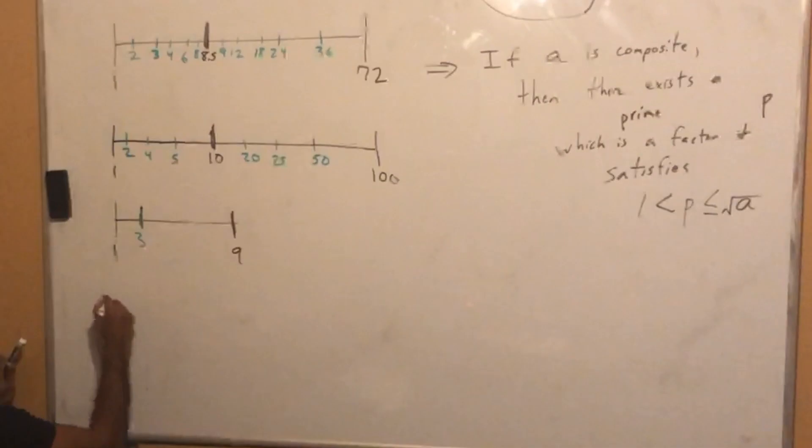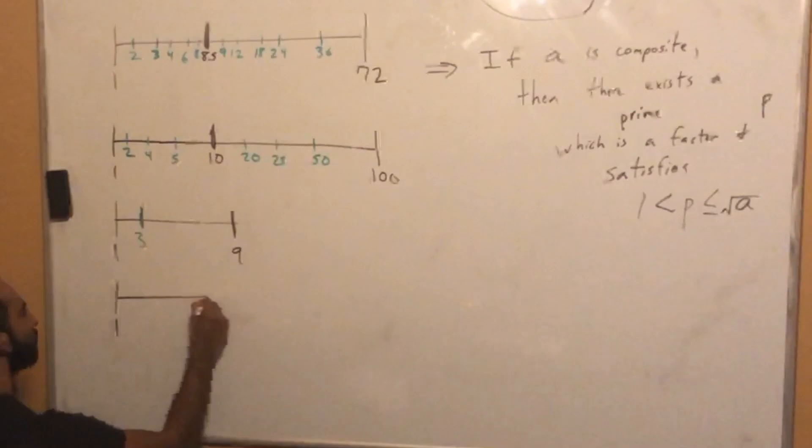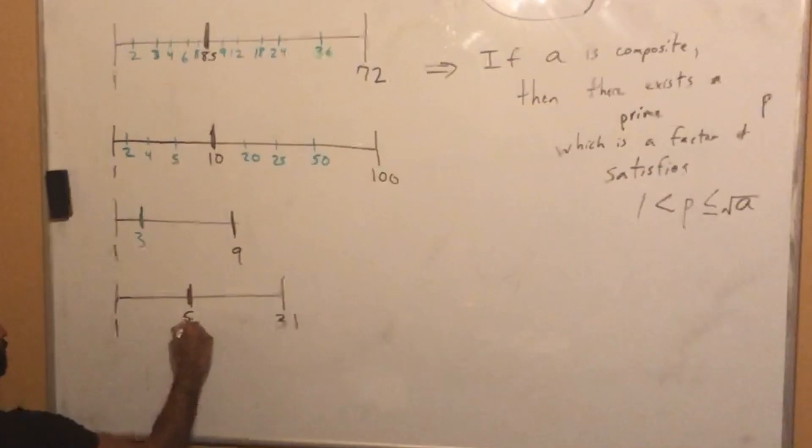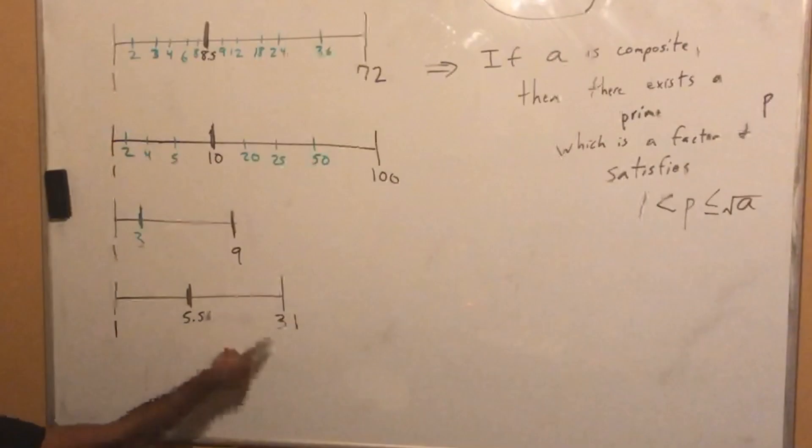Now, someone give me a prime number. 31. 1 and 31. 31 has factors of 1 and 31. The square root of 31 is 5.56, give or take. Is 5.56 a factor of 31? No. Are there any factors in this segment that are factors of 31? No. It's prime. Any factors on the right? No. Again, it's prime.